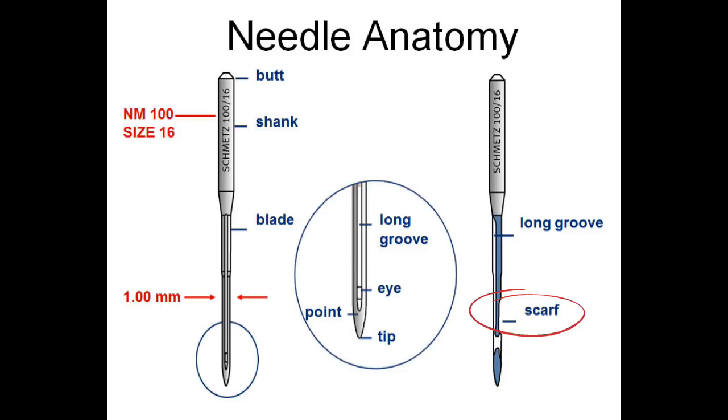While the blade might be the warrior, the scarf of the needle is the hero. That's the part of the needle that allows all that you saw in the bobbin case area to work. That's the part that allows the loops to form, that allows your bobbin and top thread to form that loop. Without the scarf, the needle would just go in and out with nothing happening.